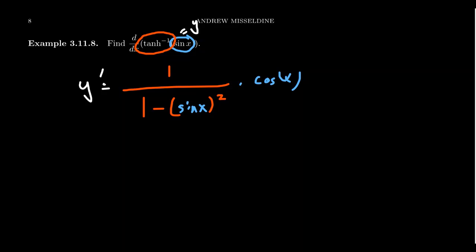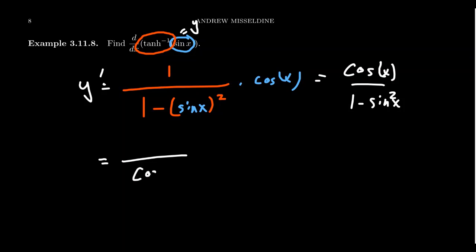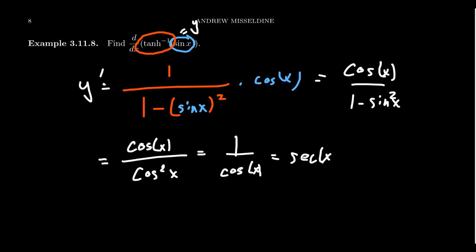Putting that together and simplifying, we get cosine of x on top and 1 minus sine squared of x on the bottom. By the usual Pythagorean identity for circular trigonometry, 1 minus sine squared is cosine squared. So we get cosine x over cosine squared x, which simplifies to 1 over cosine, which is the same thing as secant. So we have actually found a function whose derivative is equal to secant — which is a fun little observation.